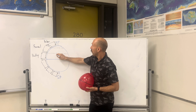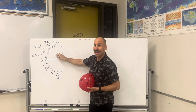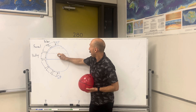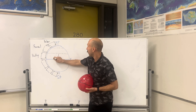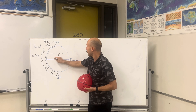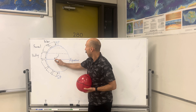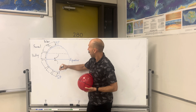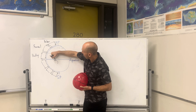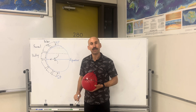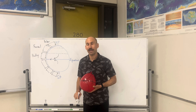We have air on Earth's surface traveling down from about 30 degrees latitude that bends to the right, and up from 30 degrees south latitude that bends to the left, creating a prevailing wind pattern known as the trade winds.